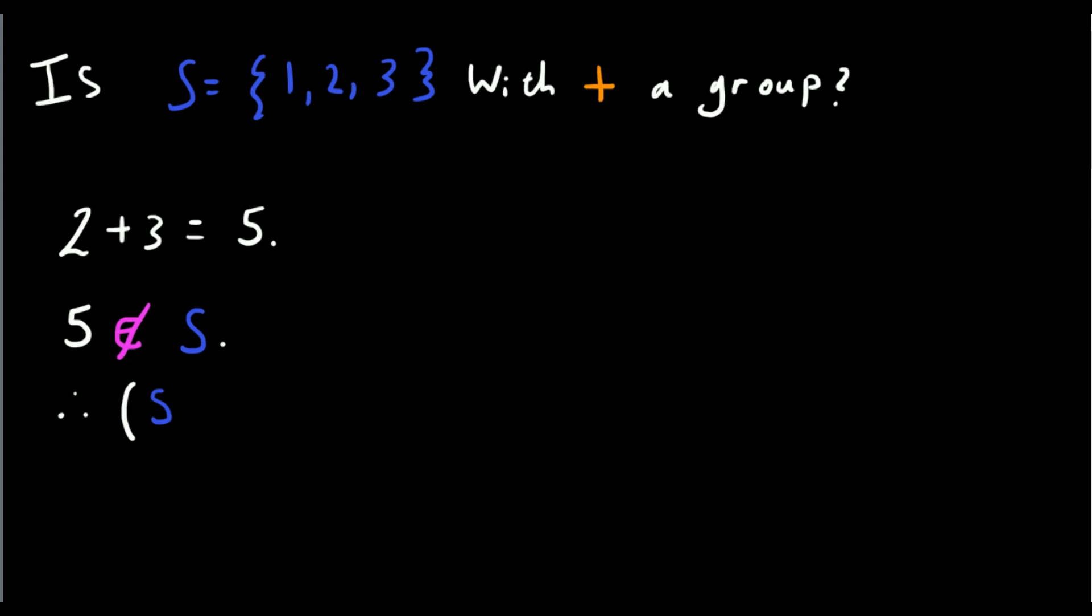This forms a good test for if you've been given some set and an operation and you want to see if they form a group. For example, say I have this set and my operation is addition. We can immediately see that 2 plus 3 is 5. 5 is not an element of the set. So the axiom of closure can't be true for all elements in the set. So we can immediately rule this out as forming a group, as it doesn't satisfy the axiom of closure. We didn't even need to know what the other three axioms were.